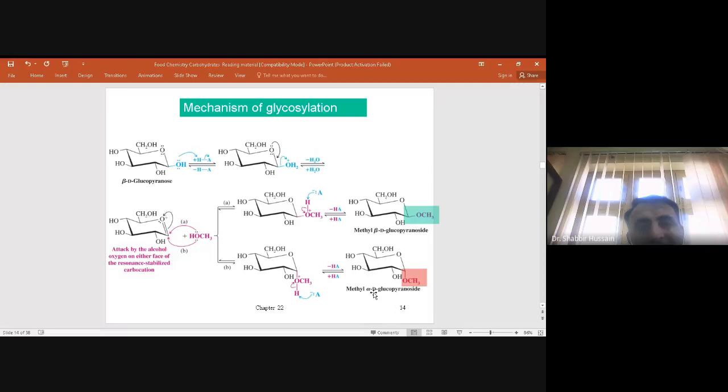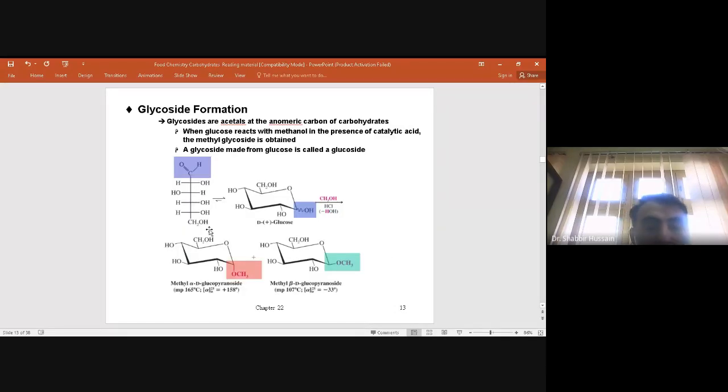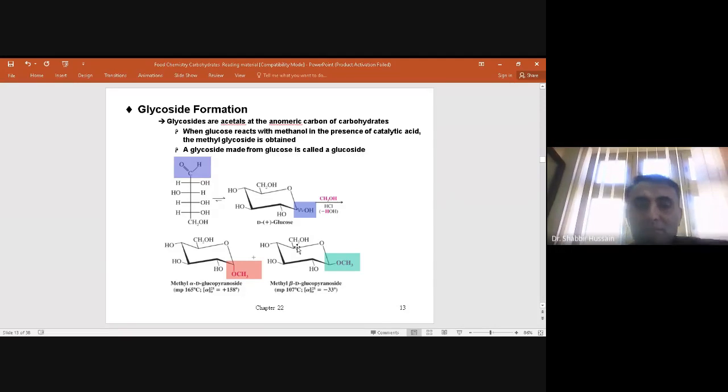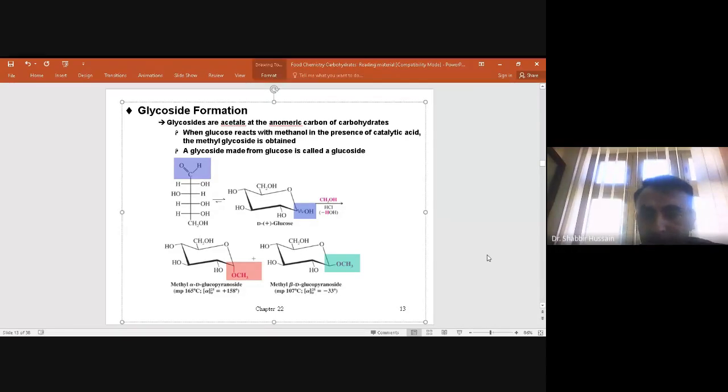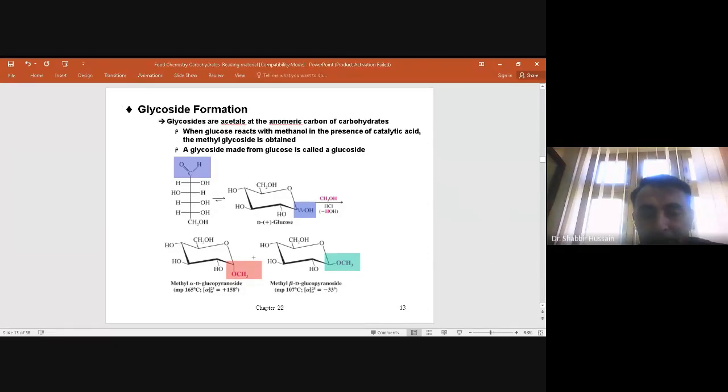There are multiple hydroxy groups, but no other hydroxy group reacts with methanol in the presence of acid except the anomeric carbon. This is the simplest chemistry of glycoside linkage when methanol reacts with glucose in the presence of acid.